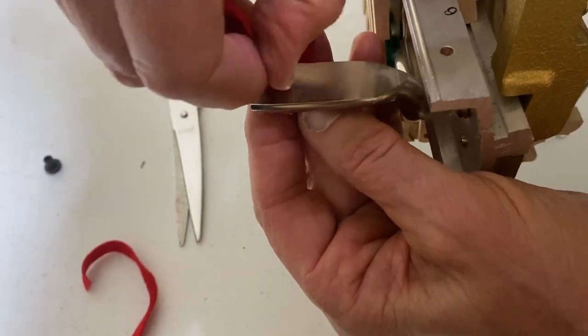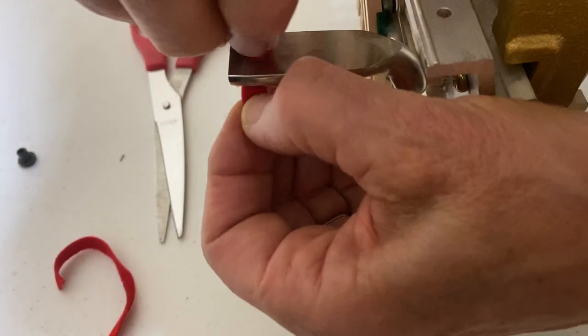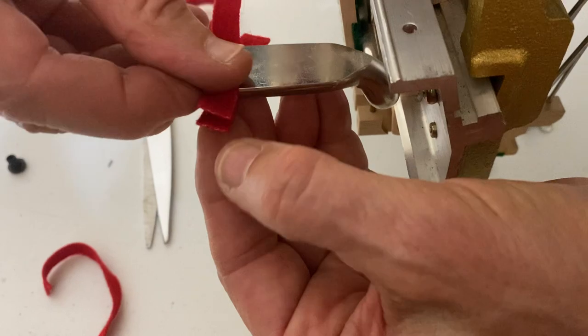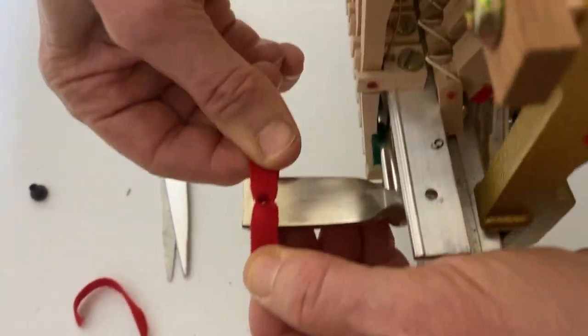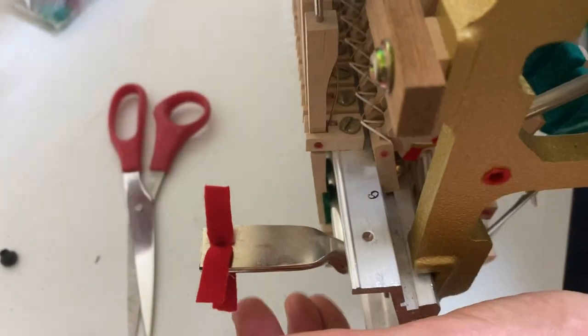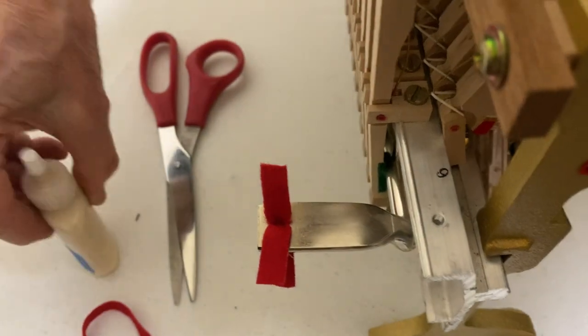You can see I gave it a good crease, folded it, and I now have a bushed hole. Then I take glue.